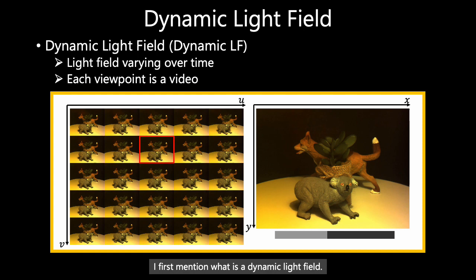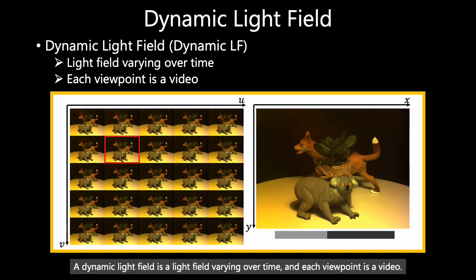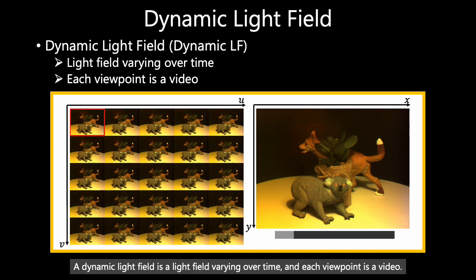A light field is usually represented as a set of images taken from many different viewpoints. A dynamic light field is a light field varying over time, and each viewpoint is a video. Because of the huge data rate, an efficient imaging method is necessary.